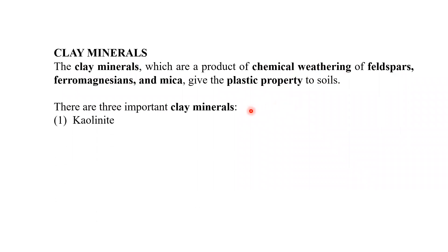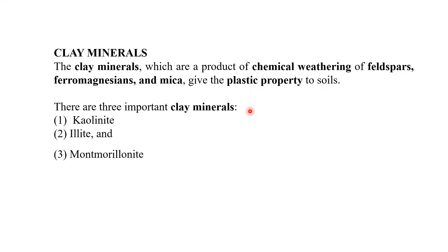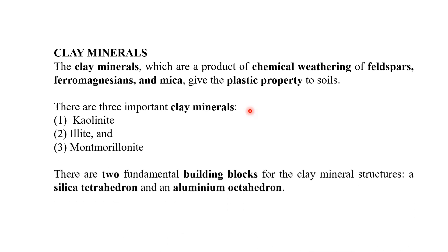We shall talk about three clay minerals: the first one is kaolinite, the second is illite, and the third is montmorillonite. In the formation of clay minerals, two building blocks play a major role: the first one is called the silica tetrahedron and the next one is called the aluminum octahedron.